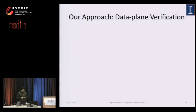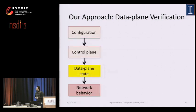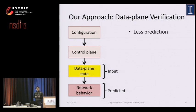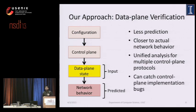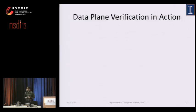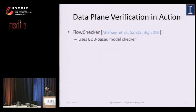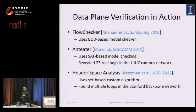That is why in our group we focus on data plane verification. In this technique, we use the data plane state as input and predict network behavior from that, with a much lower degree of prediction and closer to actual network behavior. This technique allows unified analysis for multiple control-plane protocols and can find bugs in control-plane software that only affect the data plane. This approach showed potential in works such as FlowChecker using binary decision diagrams, our earlier Anteater work, and Stanford's Header Space Analysis, which were used on real networks and found real bugs.